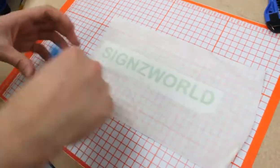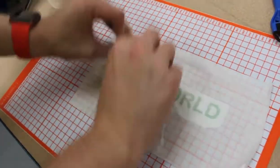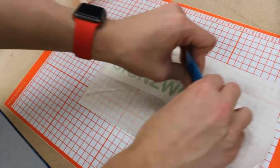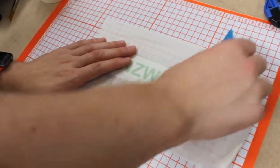Now you need to grab something like a squeegee or a credit card. You need to really work those letters.